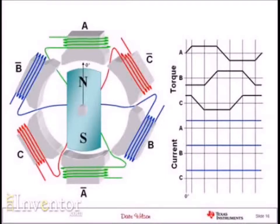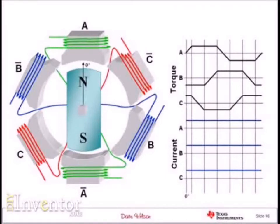Looking at each commutation interval, here's the rule: if positive current in a particular coil for that commutation interval results in positive torque, I leave it alone. But if positive current in a particular commutation interval results in negative torque, and I want positive torque, I have to flip — or invert — the current for that commutation interval for that phase. For those commutation intervals where the torque is transitioning from low to high or high to low, I'll turn that coil off during that period. Applying this rule consistently to all three phases across all commutation zones produces a current waveform as shown.